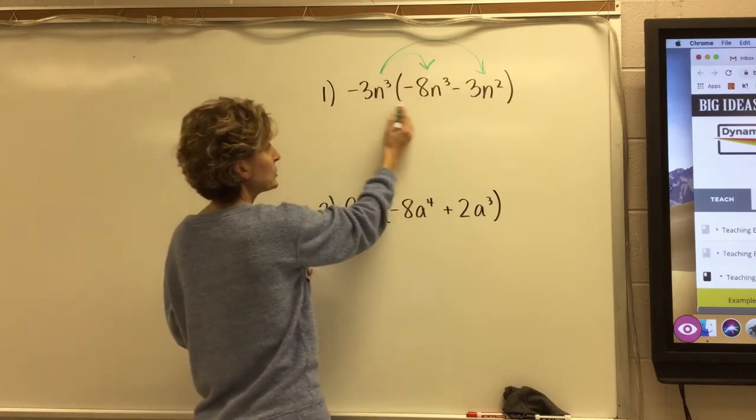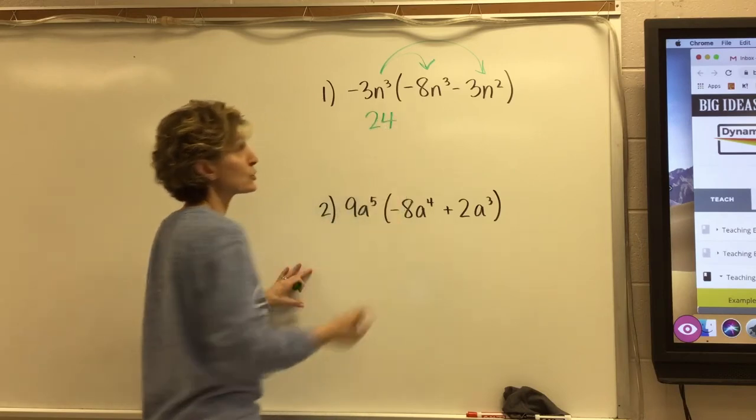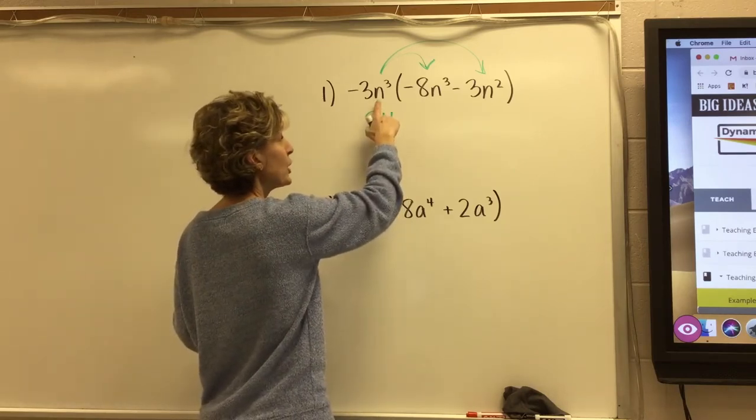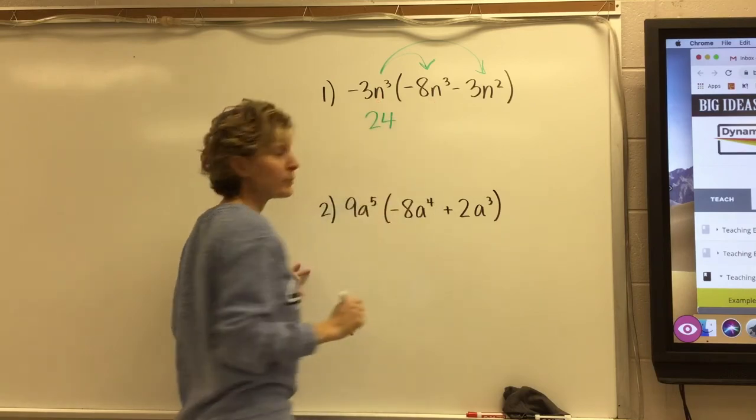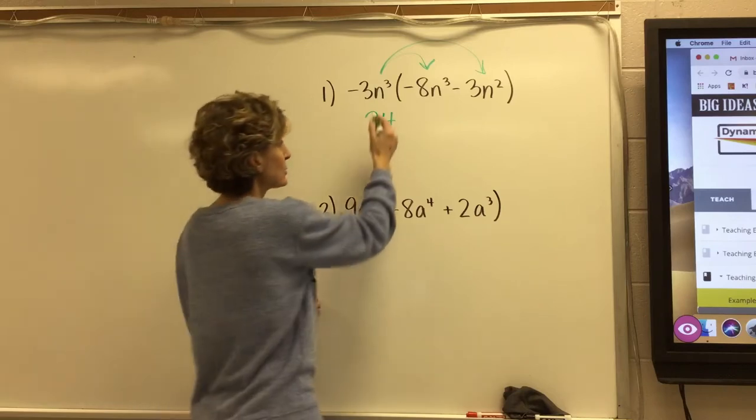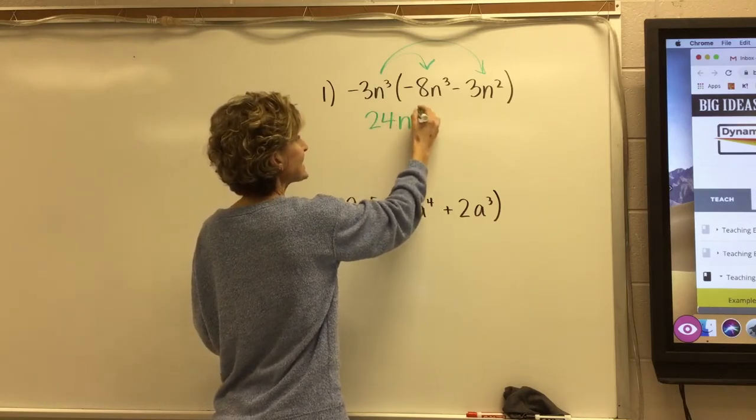When I multiply two negatives, I get a positive. 3 times 8 is 24. And if you remember, when I multiply two variables, you add the exponents. So it's 24n to the sixth.